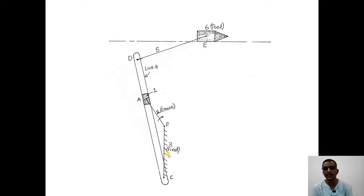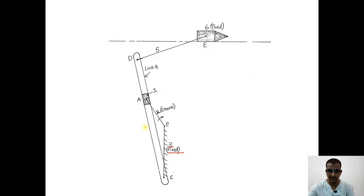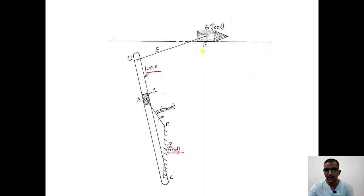Now we will explore the construction of a crank and slotted lever mechanism. Link number three is fixed, which indicates that this is a third inversion of a single slider crank mechanism. Link two is the crank which rotates in the clockwise direction. Link one is the slider which moves up and down in link four, which is the slotted lever. Point D of the slotted lever is connected to the tool through link number five, and currently the tool is at position E.